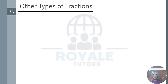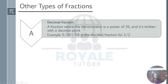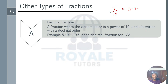We have other types of fractions. We have the decimal fraction. Decimal fractions are fractions that have denominators that are powers of 10, and they are written with a decimal point. For example, 5 over 10 is 0.5, and it is a decimal fraction for 1 over 2. You can also have 7 over 10, which is 0.7, or 5 over 100, which is 0.05. In today's lesson we won't go into this further — we'll learn this in our next video.